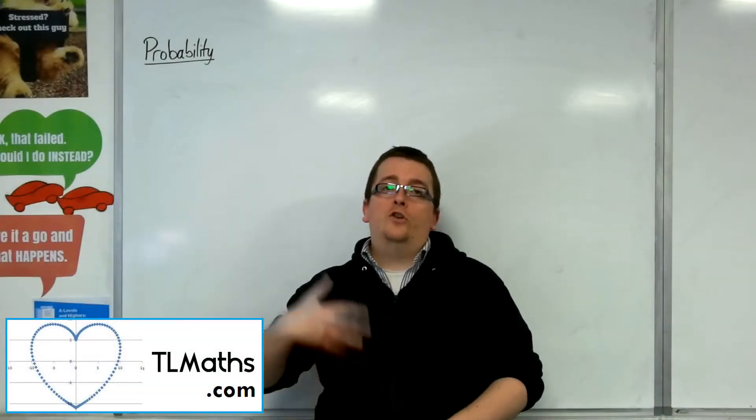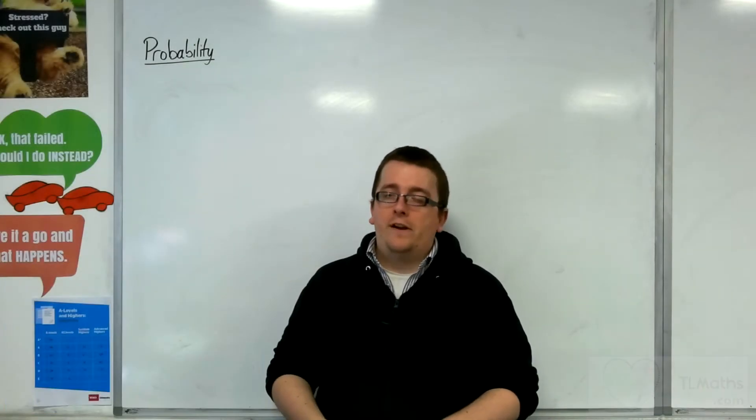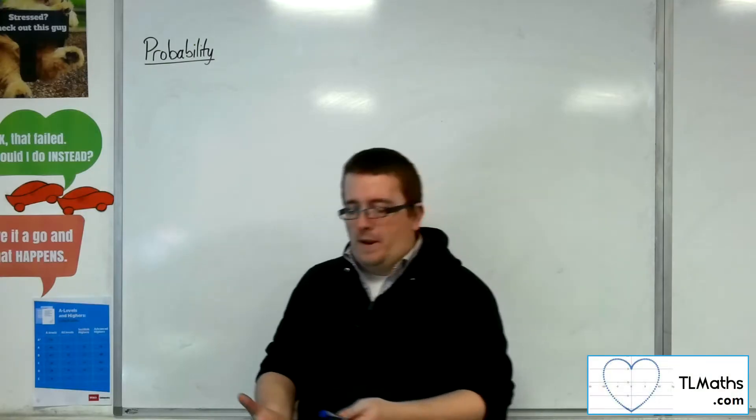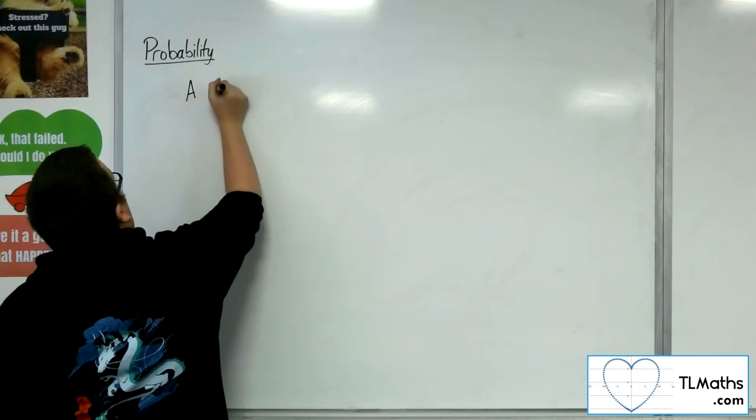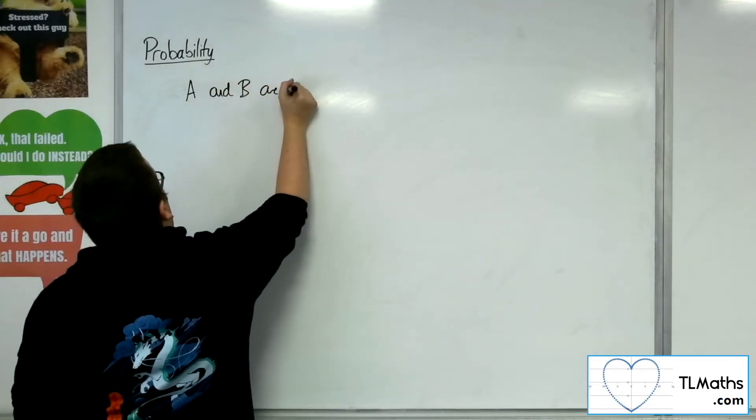In an earlier video, we looked at how we can identify whether two events are independent. So we said that A and B are independent.